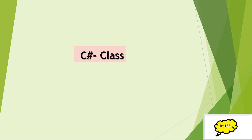Object-oriented programming — the name itself has 'object.' An object is nothing but the class, or something you can say is an object. It contains some stuff related to the object and can be accessible using an object by creating an instance to the class. A class enables you to create your own custom types by grouping together variables of other types, along with methods and events.